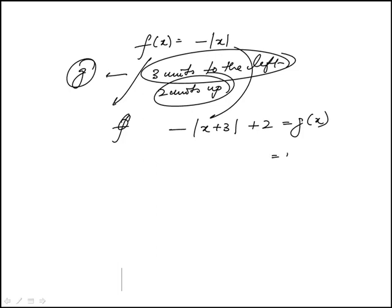We need to find g of minus two, so replace x with minus two. So this is minus the absolute value of minus two plus three, which is one.